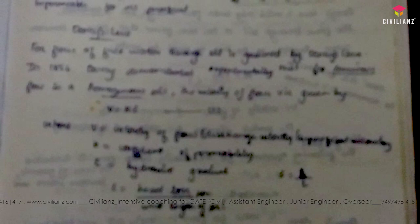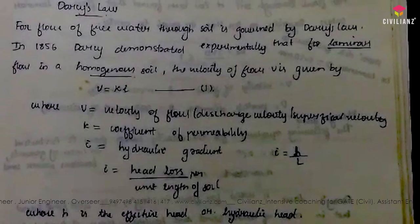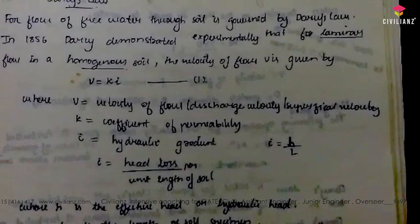Next is Darcy's law. The flow of water through soil is given by Darcy's law, demonstrated in 1856. Darcy showed that for laminar flow in a homogeneous soil, the velocity of flow v is equal to ki, where k is the coefficient of permeability and i is the hydraulic gradient.